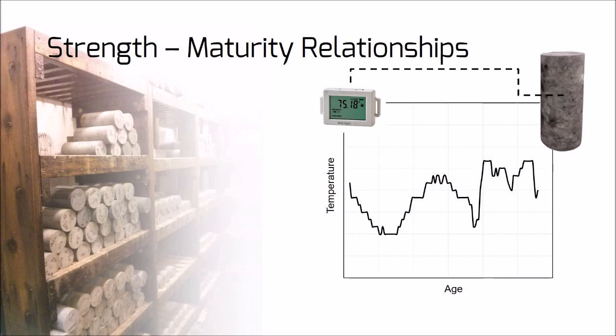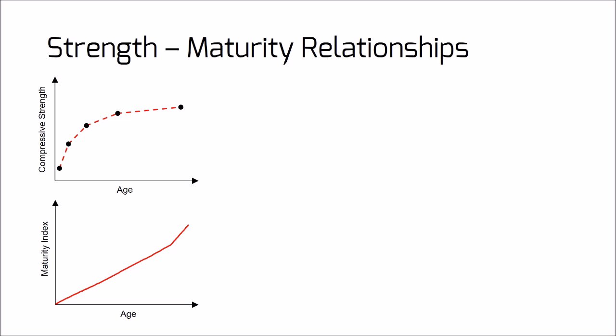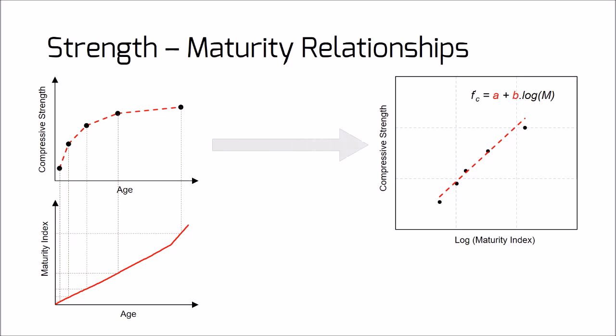This makes it possible to calculate the maturity index, but one must also determine the datum temperature, following the procedure described in the standard. When all measurements are complete, a strength-to-maturity relationship can be developed. The maturity index is calculated for each compressive strength data point using the datum temperature and temperature history. Compressive strength is plotted against the logarithm of the maturity index, and a linear regression is applied to determine the A and B coefficients for the best-fit equation — giving the relationship between maturity and compressive strength for predicting early age strength.